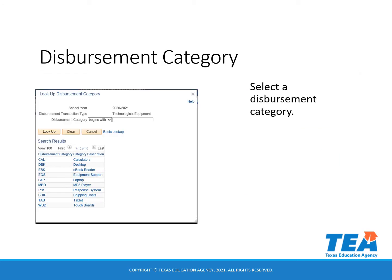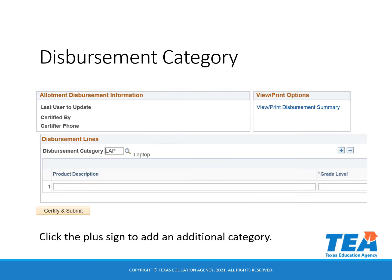From the Disbursement Category list, you will choose the category closest to the equipment you are requesting funds for. You will need to make a new category for each type of equipment. To choose an additional category, click on the plus sign to the right of the category you have already chosen. Your new category will appear below the category you chose first.